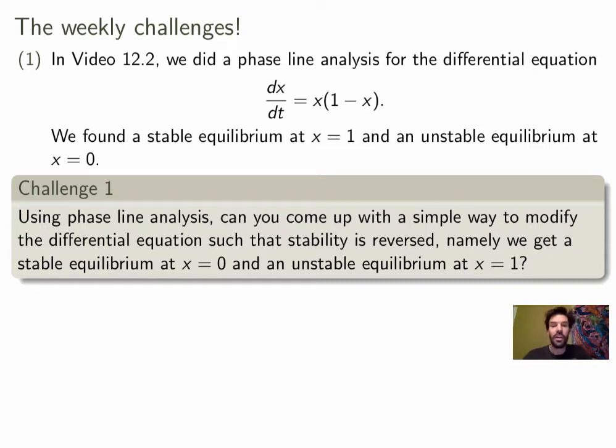Here's the first challenge. Using phase line analysis, can you come up with a simple way to modify the differential equation such that stability is reversed? So we want to modify the differential equation such that we still have equilibrium points at x equals 0 and x equals 1, but the stable one is now at 0 and the unstable one is at 1.